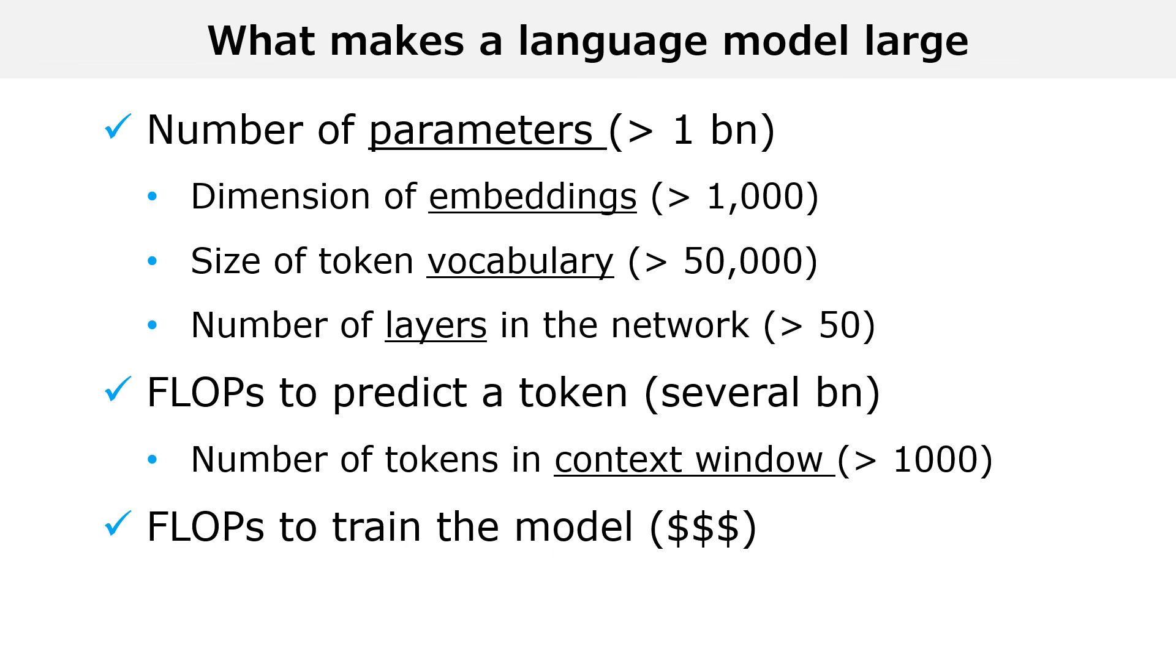The cost is roughly proportional to the number of operations per token and to the size of the dataset used to train the model, measured in number of tokens. This size is typically in the order of several hundred billions of tokens, which is equivalent to several millions of medium-length books of text.